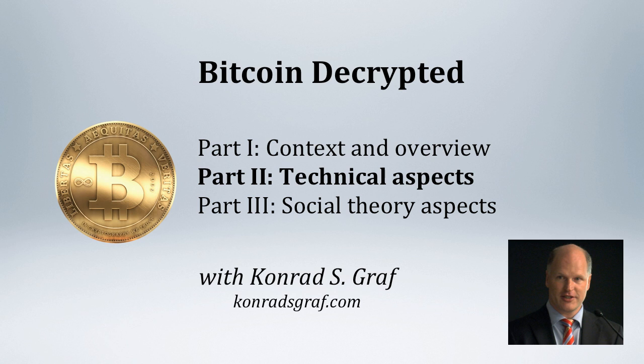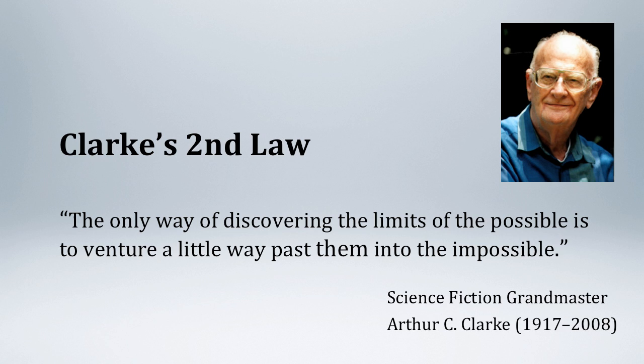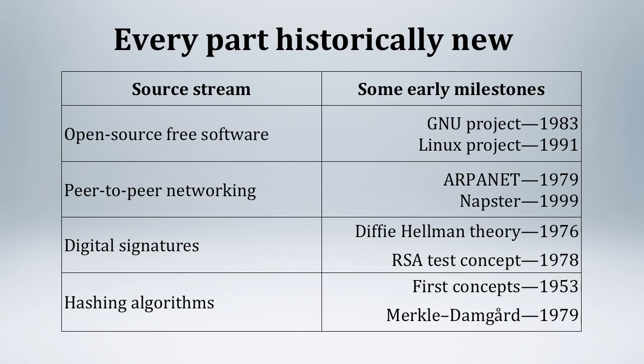Clark's Second Law states that the only way of discovering the limits of the possible is to venture a little way past them into the impossible. Bitcoin uses several major streams of technology and method, each of which is quite recent in historical perspective: an open source free software model, peer-to-peer networking, digital signatures, and hashing algorithms. The very first developments in each of these areas occurred in the 1970s through the 1990s. Bitcoin combines some of the best later developments in each area to make new things possible on top of them. Since few people understand any of these basic components, understanding an innovation that combines a number of them in new and surprising ways is, of course, challenging without some study.